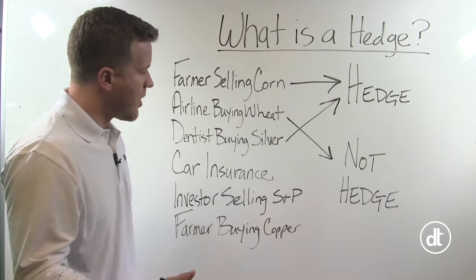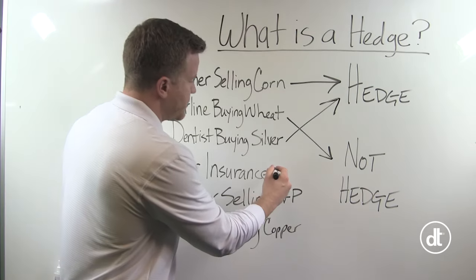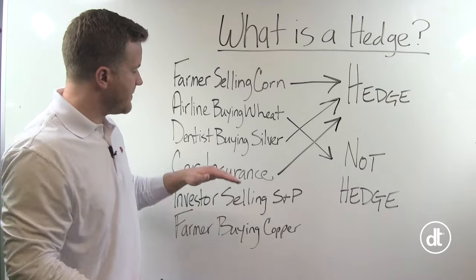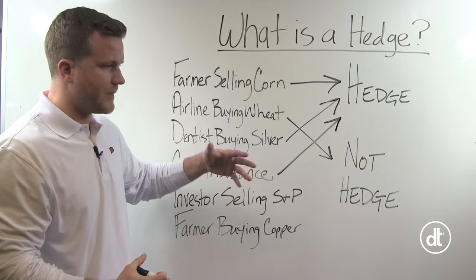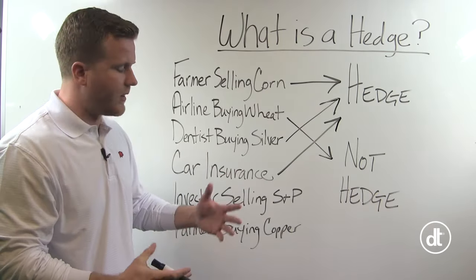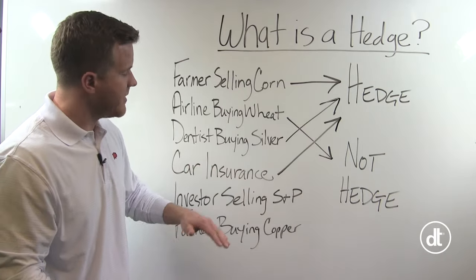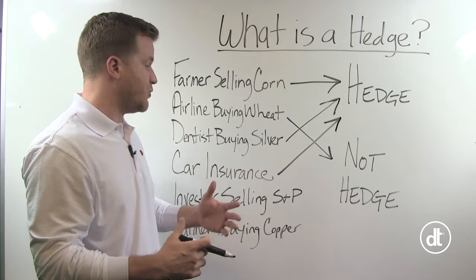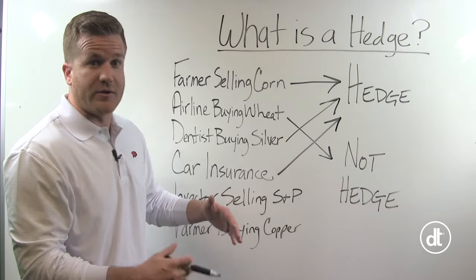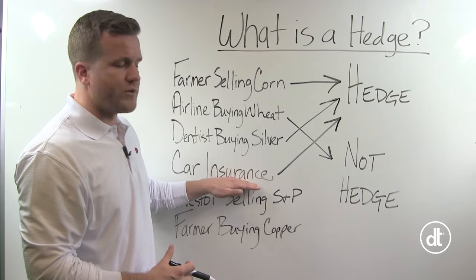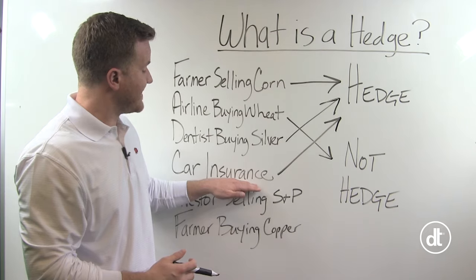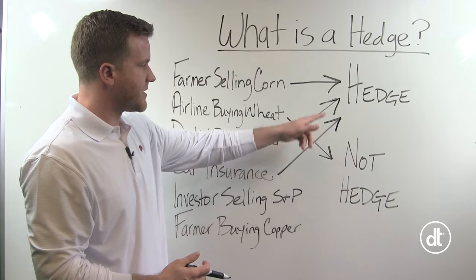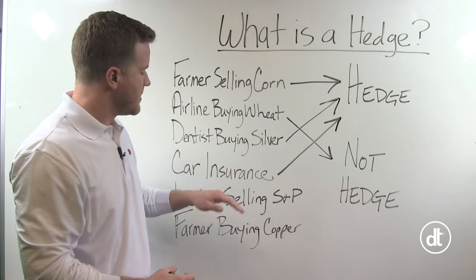What about car insurance? Car insurance is a hedge. If you get in a wreck, your car insurance will cover you — whatever vehicle you hit as well, unless it's a single car accident. It's protecting you from an adverse price movement of potentially expensive repairs or having to buy a whole new car. That's what insurance does — it gives you the ability to not pay all that out of pocket. That's why you pay the premium. So it's a hedge.